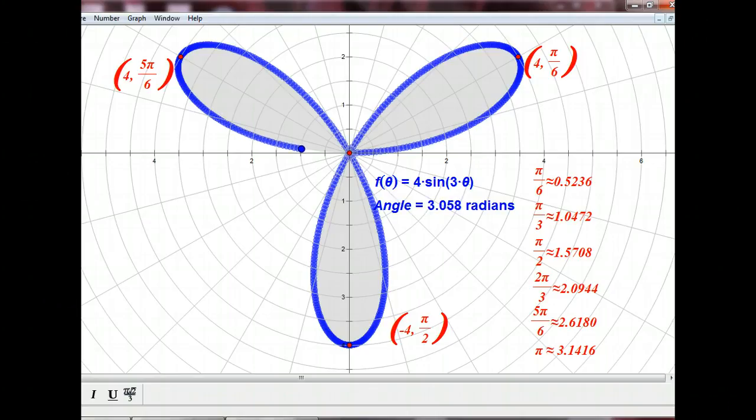So you kind of have to be careful when you're doing these endpoints of integration. A lot of people think, okay, well, it goes around 2 pi, so I'll just integrate from 0 to 2 pi to get the entire area. But this graph actually only goes to pi to complete the whole cycle. If you went to 2 pi, you would repeat the entire graph again, so you'd have too much area.